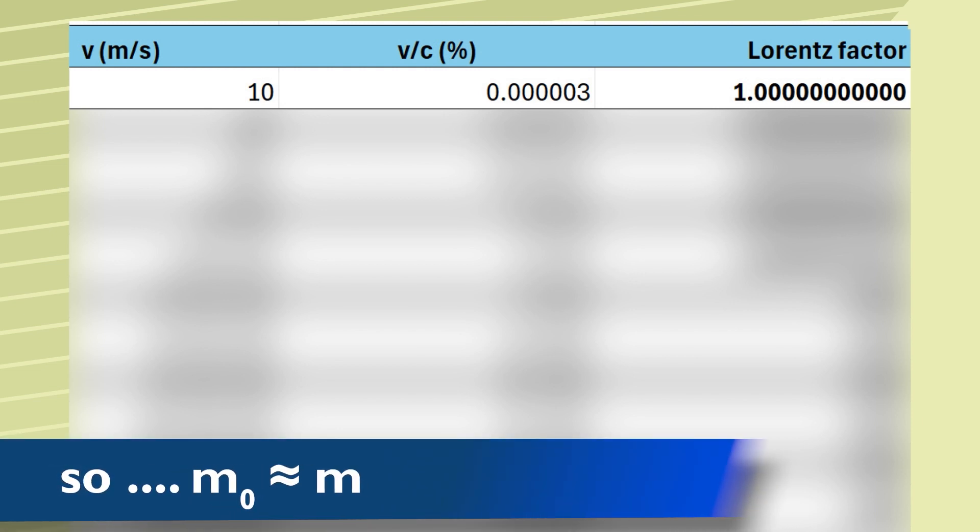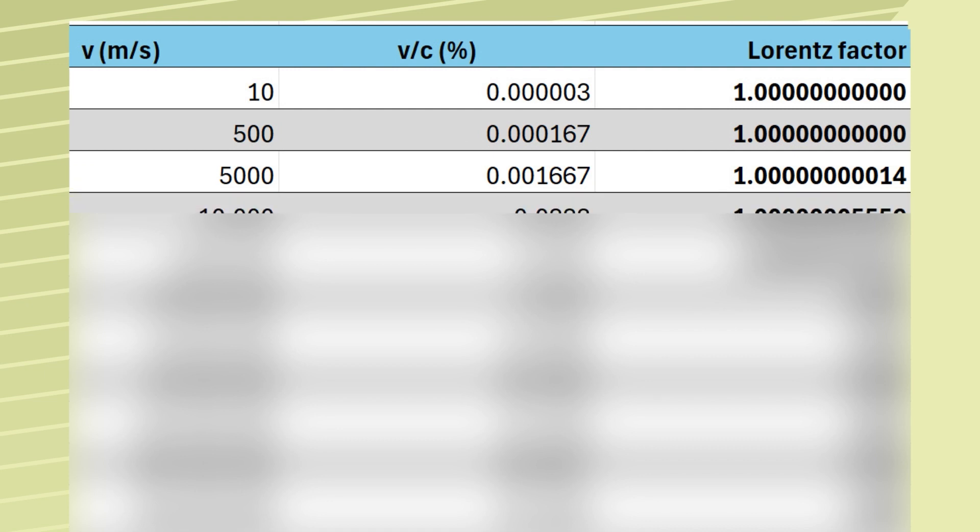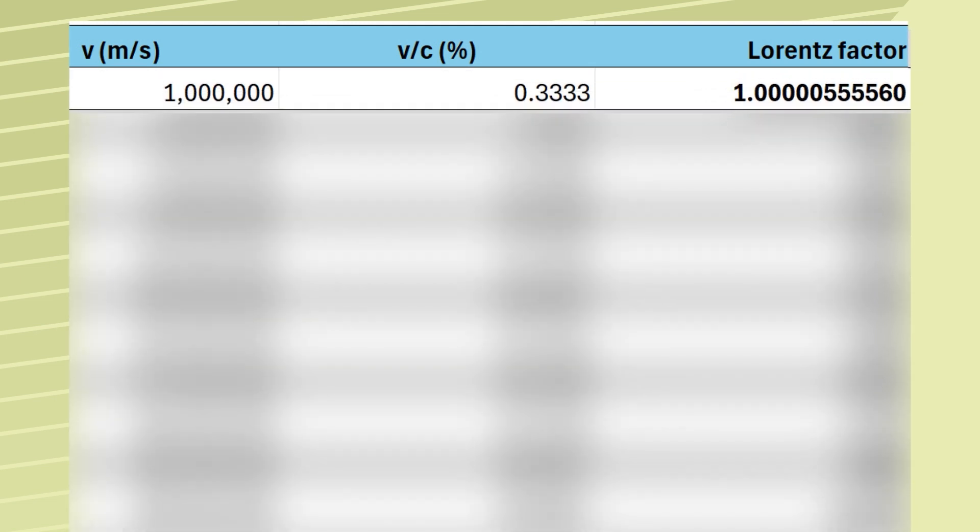You can say a similar thing really with speeds like 500 meters per second and even 10,000 meters per second. The Lorentz factor is basically one. Even when you get to, sarcasm alert, vanishingly small speeds like a million meters per second, the percentage of the speed of light is still only 0.3%, meaning the Lorentz factor again is basically one.